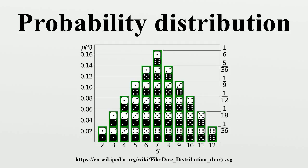In contrast, when a random variable takes values from a continuum, typically probabilities can be non-zero only if they refer to intervals. In quality control, one might demand that the probability of a 500 g package containing between 490 g and 510 g should be no less than 98 percent.